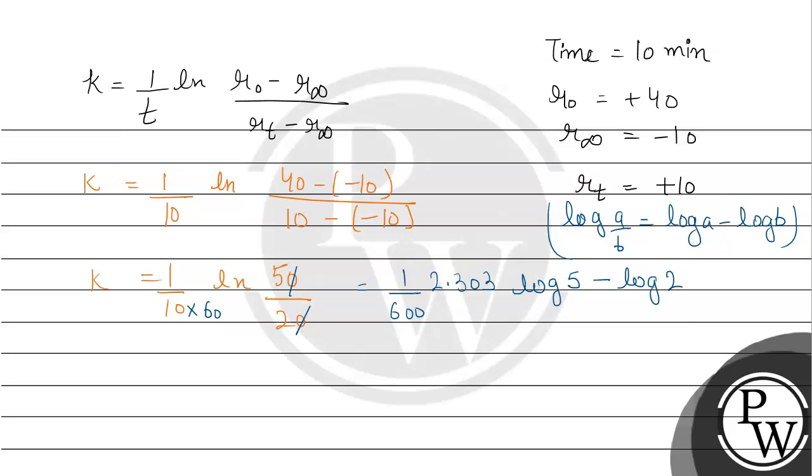So using this formula, we have written log of 5 minus log of 2. Now 1 divided by 600 and here 2.303, it is 2.303. Log 5's value is 0.6989 minus log 2, 0.3010.